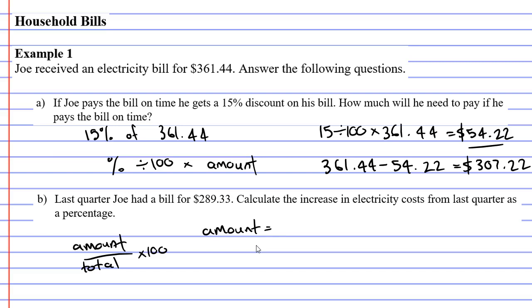The increase—it went from $289.33 and increased to $361.44, so to calculate our increase we need to subtract them from each other.